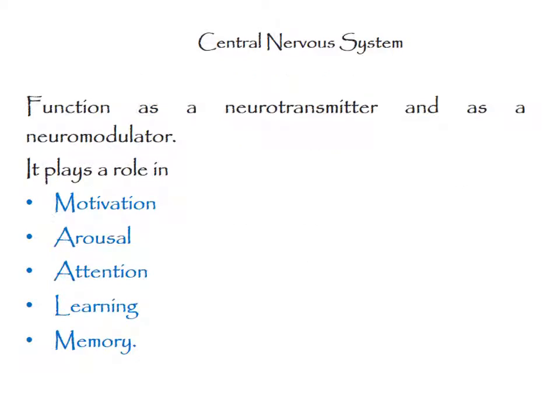In the central nervous system, acetylcholine acts at various sites such as hippocampus, cerebral cortex, and basal ganglia.